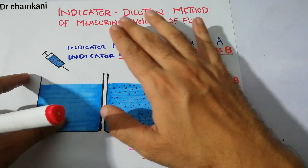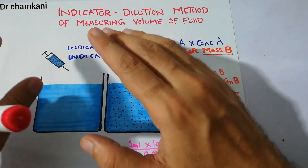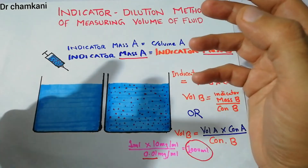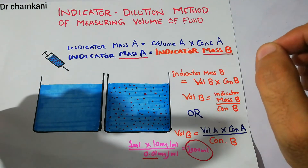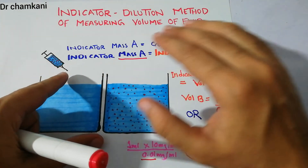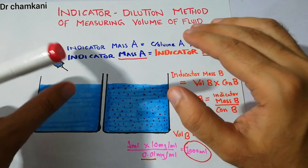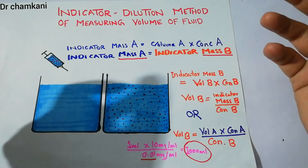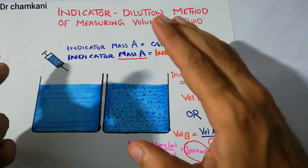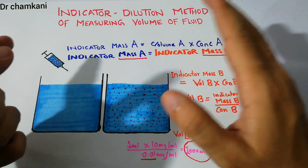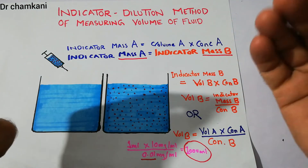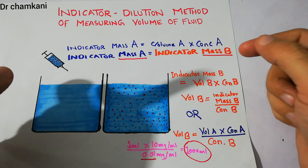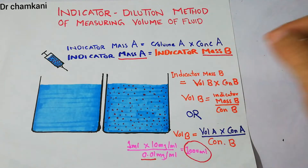That is basically the indicator dilution method for determining the volume of any fluid. We are going to use this method to discuss how it is used to determine the amount of fluid in the human body. That's all about the indicator dilution method.